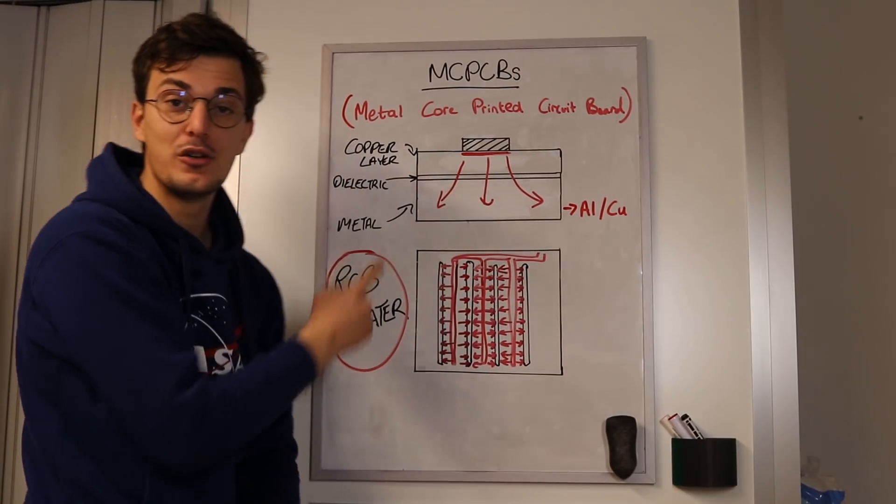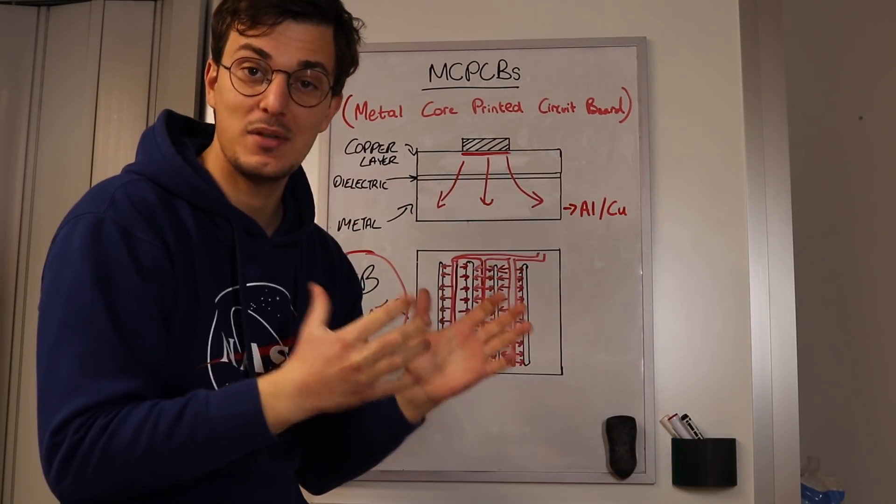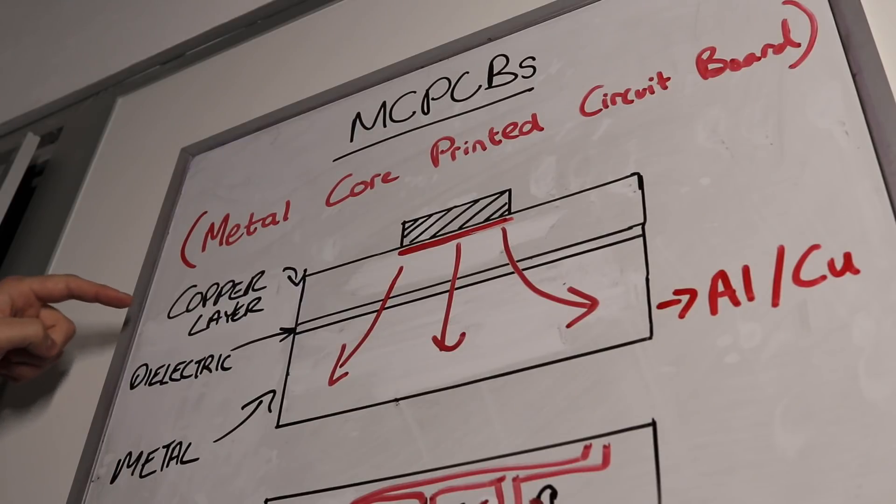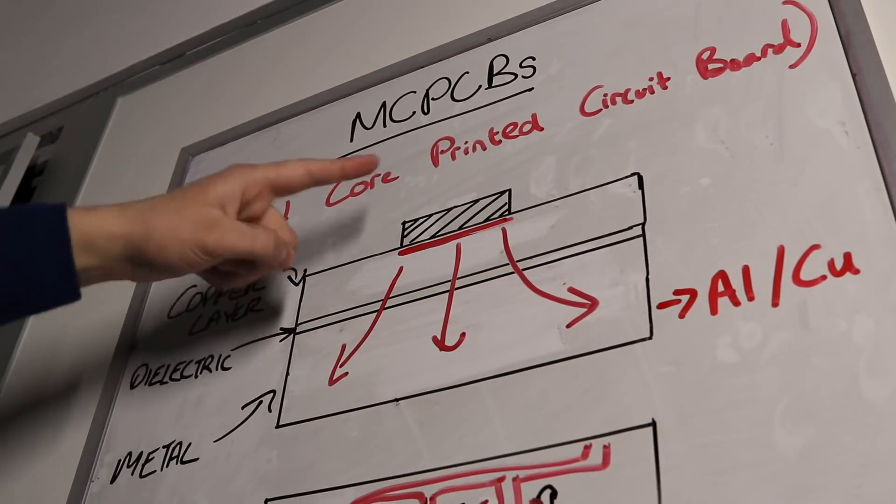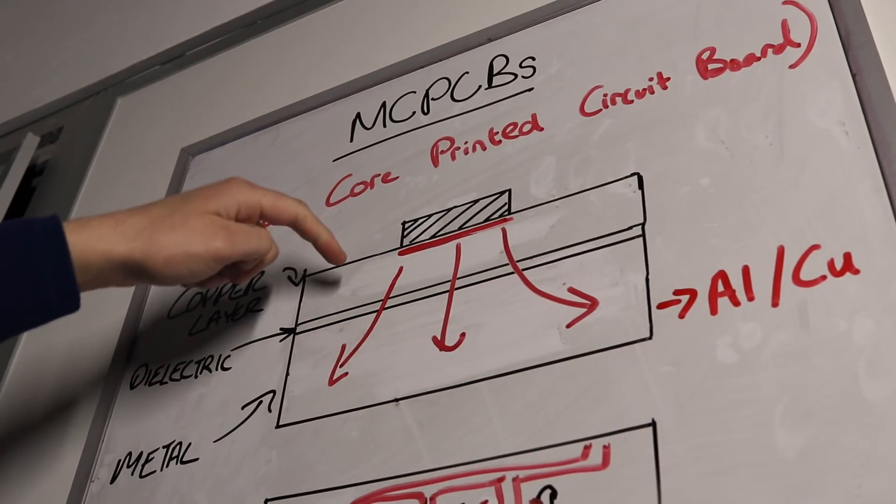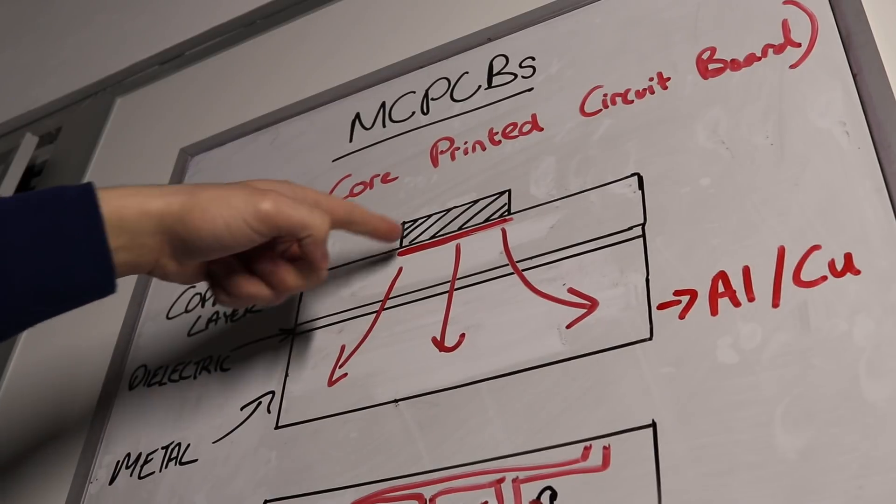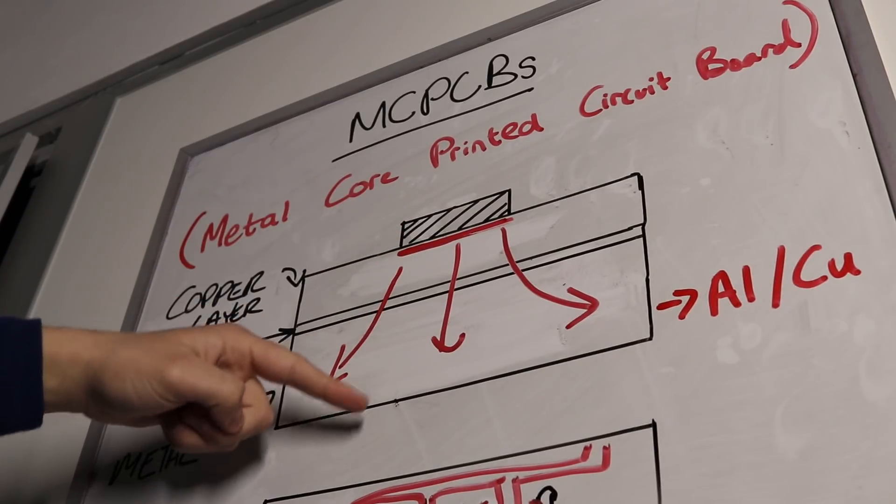So you might be thinking if FR4 is not rated to go up to this temperature, how on earth are you going to make this PCB more thermally efficient? Metal-based PCBs are used to try and keep electronics and PCBs cooler. Typically they consist of a copper layer, dielectric and metal which can be aluminum or copper. So this process is used to try and keep the electronics and circuit layer cooler and transfer all the heat out to like a heatsink.